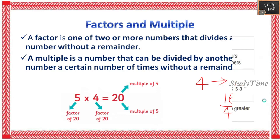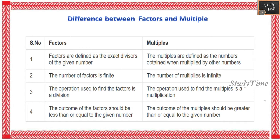Now the differences between factors and multiples. First, factors are defined as the exact divisors of a given number, whereas multiples are defined as the numbers obtained when multiplied by other numbers. Second, the number of factors is finite — you can count them — whereas multiples can be infinite. Third, the operation used to find factors is division, while for multiples it is multiplication. Fourth, the value of factors should be less than or equal to the given number, whereas multiples should be greater.